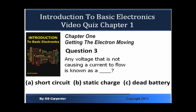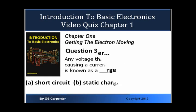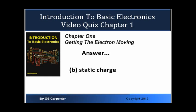Okay, Question 3. Any voltage that is not causing a current to flow is known as: A, Short Circuit; B, Static Charge; or C, Dead Battery. Answer: B, Static Charge.